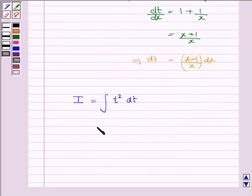And the integral of t squared dt is t to the power 2 plus 1 upon 2 plus 1 plus c, which is equal to t cubed upon 3 plus c.